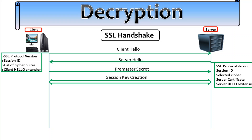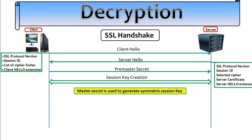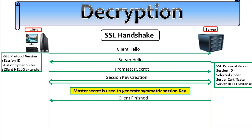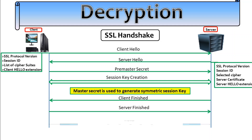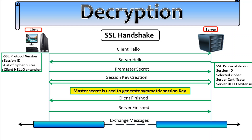They then form a master secret key using a symmetric session key. Once the master key is created, both the server and client acknowledge and finish with each other. After this, the actual message exchange starts. This is how the TCP and SSL handshake is performed before decryption takes place.